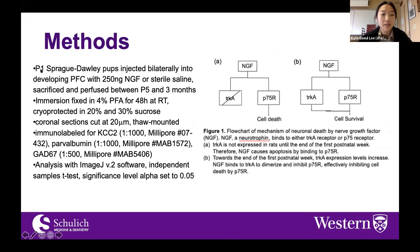For my project, we injected P1 rats bilaterally into the developing prefrontal cortex with NGF or sterile saline, and they were sacrificed at multiple time points from early postnatal — P5 to adulthood. They were immersion-fixed, coronal sections were cut, and subsequently immunolabeled for KCC2, parvalbumin, and GAD67. Images were analyzed with ImageJ software. NGF was used to lesion the subplate, which during early postnatal weeks binds to the P75 receptor, causing cell death specifically within the subplate layer.